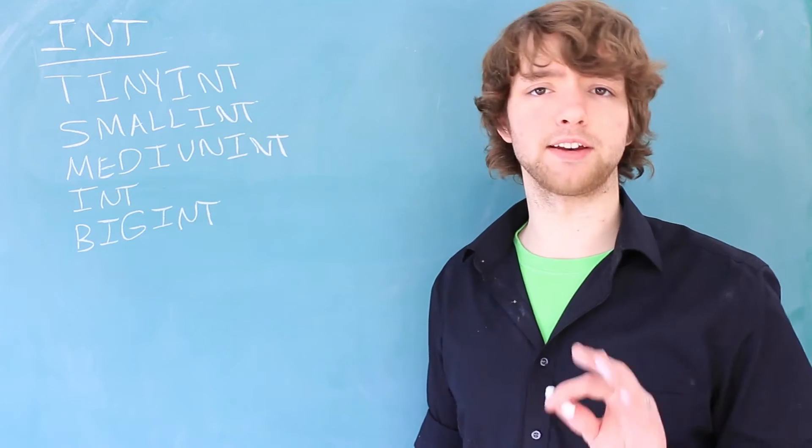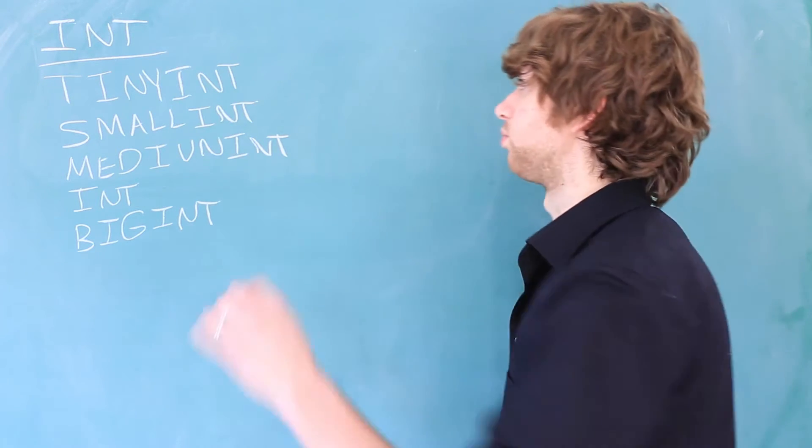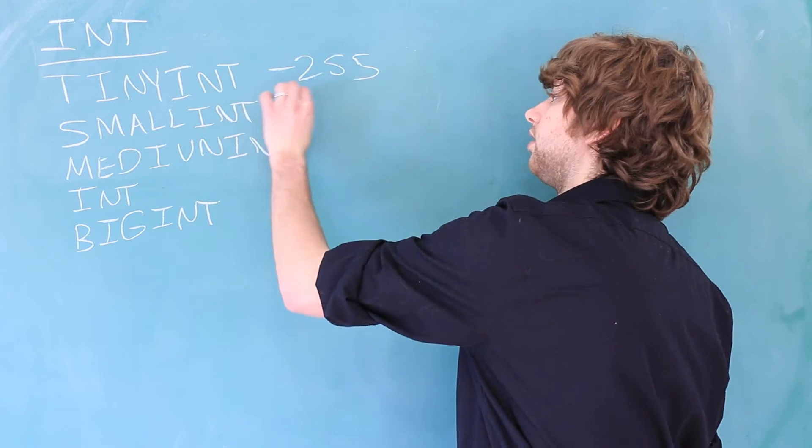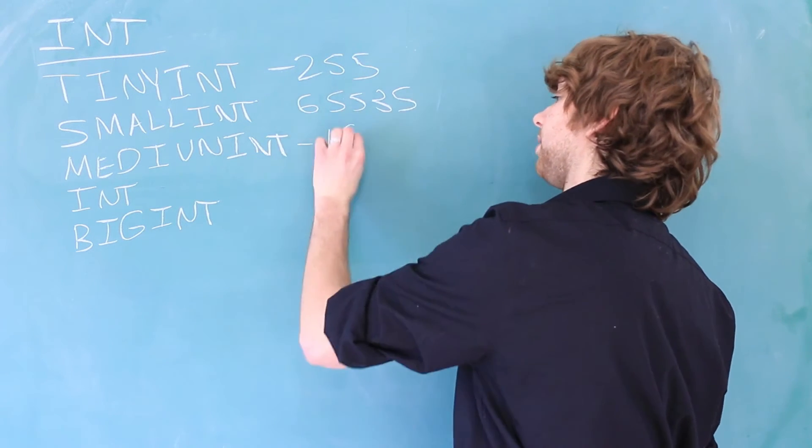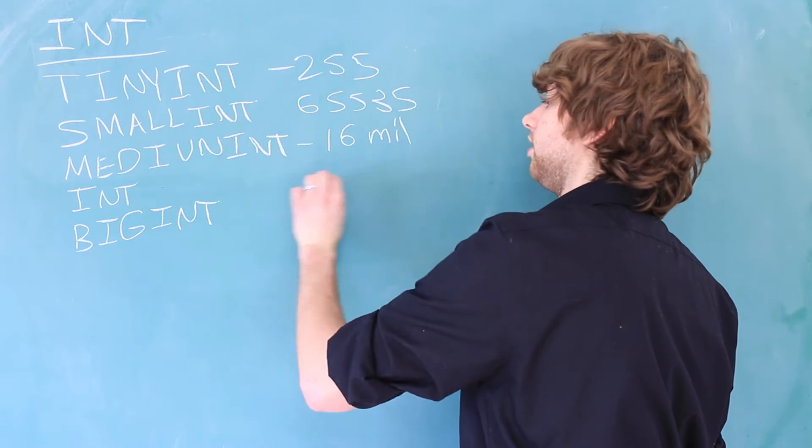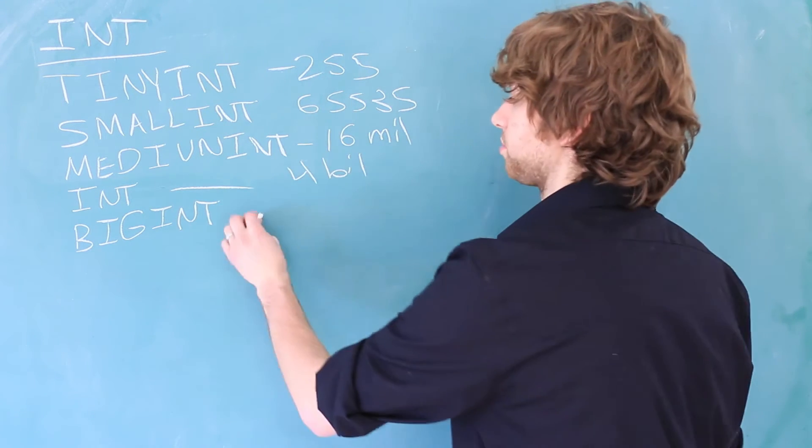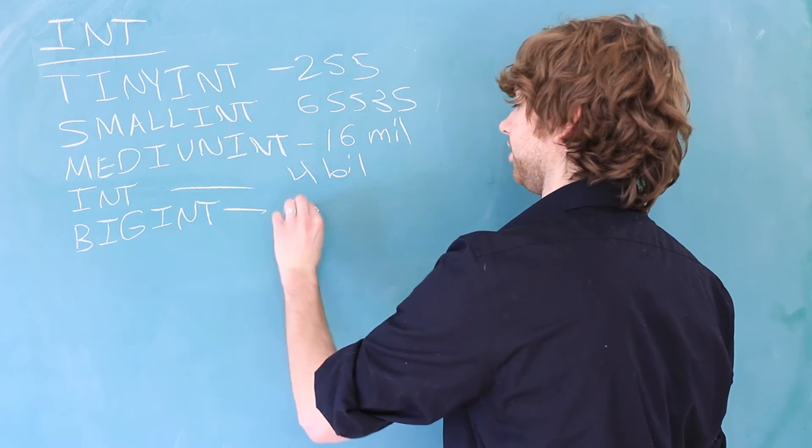If you want to know the exact numbers, you can look those up. But roughly, I think this one is 255, 65535, this one is about 16 mil, and then this one is about 4 billion, and then this one is like thinking a ton. And these three are just estimates.